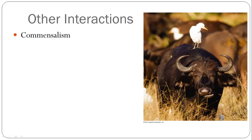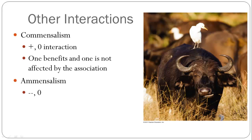Commensalism is a positive-neutral interaction — like a cattle egret hitching a ride on a water buffalo. The egret gets a free ride, but the water buffalo isn't really affected or slowed down. Amensalism is a negative-neutral interaction, where one is negatively influenced and the other has no benefit from it.